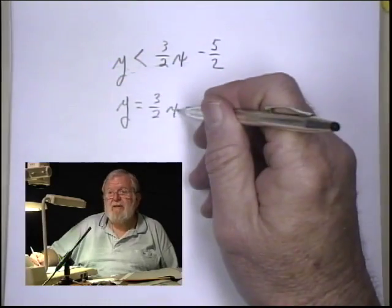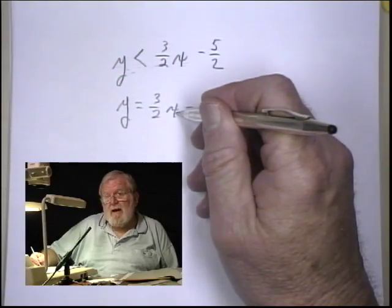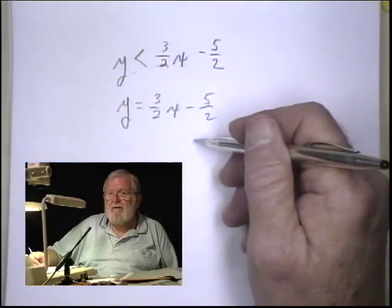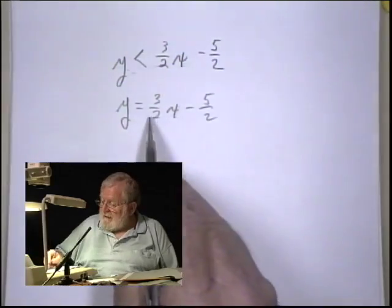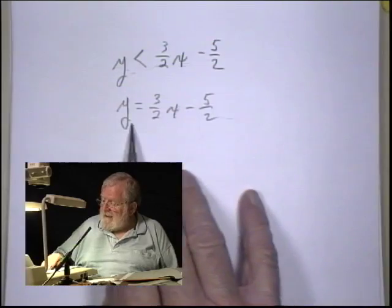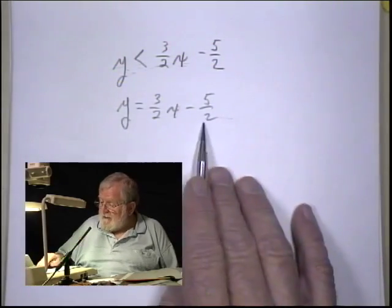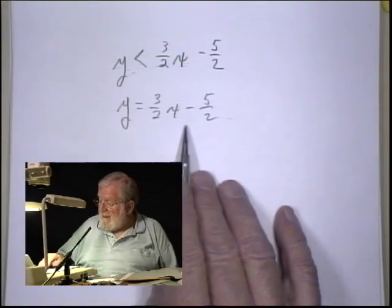And that straight line is going to be the boundary of my inequality. I'll have to figure out what side of the line the inequality is on, but I'll at least have the boundary of the inequality if I use an equation here, make this into an equation.